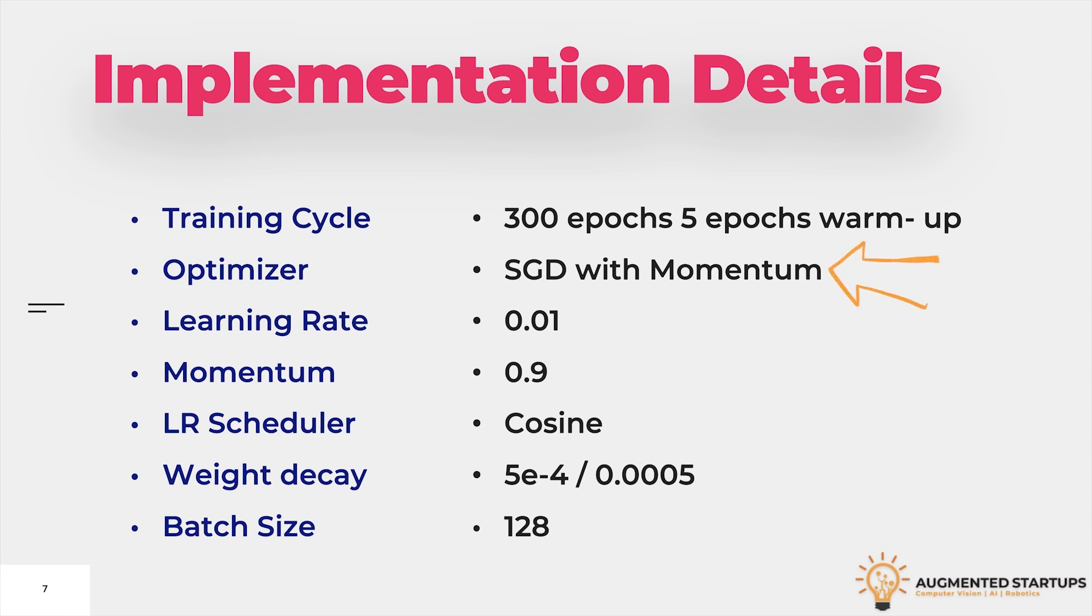They used SGD with momentum for training, with an initial learning rate of 0.01 and a momentum of 0.9. To adjust the learning rate, they used a cosine annealing scheduler and a weight decay of 5e-4. They process the images in batches of 128 by default on typical 8 GPU devices.